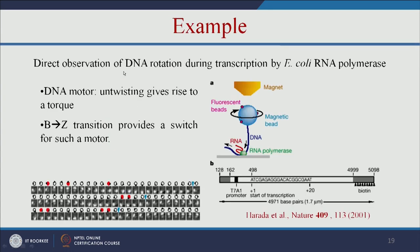Let us see another example: how to make a DNA-based rotor or motor. We can use DNA and the RNA polymerase enzyme. When it synthesizes RNA, the DNA will start rotating. We can measure this by tagging the DNA with a magnetic bead, and on top of the magnetic bead we can add fluorescence beads. The magnetic bead is held by an external magnetic field, so when RNA polymerase makes RNA the DNA rotates, and this rotatory motion can be monitored using a microscope.